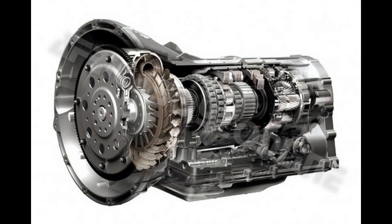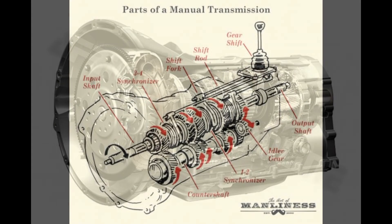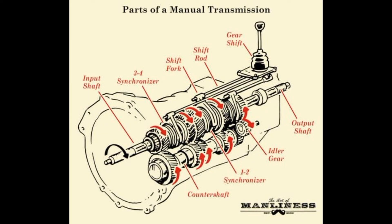Types of manual transmission: 1. Sliding mesh gearbox: It is the oldest type of gearbox. In a sliding mesh gearbox, the gears of the main shaft and lay shaft are not in mesh — they are independent. Only a single gear is in continuous mesh with the gear on the clutch shaft, which rotates the lay shaft, and the meshing of gears with the appropriate gear on the lay shaft occurs due to the left or right sliding of the gears of the main shaft. Note: sliding mesh requires a special technique for shifting of gears known as double declutching.